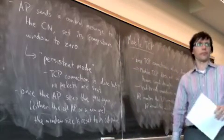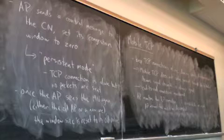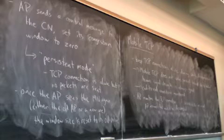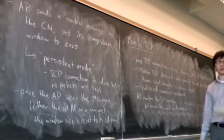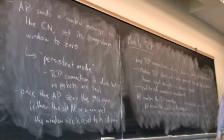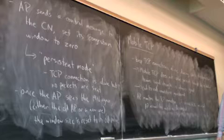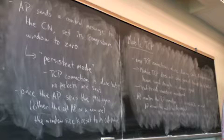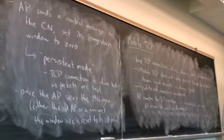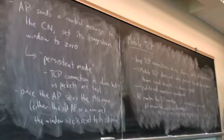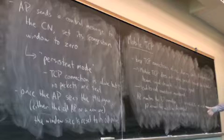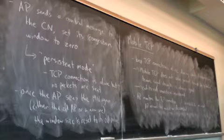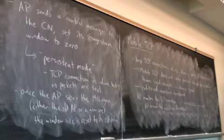The window size is reset to its old value. It could be a new connection — good question. Presumably all of the nodes will agree that they're using mobile TCP. So as soon as the mobile node enters the domain of the new access point, there's got to be some kind of control message exchanged saying 'I have a connection,' or maybe the mobile might start sending acknowledgement packets and the access point learns about the TCP connection that way.